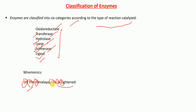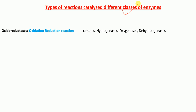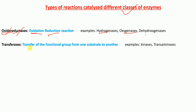Now let's talk about the reactions catalyzed by each class. Oxidoreductases catalyze oxidation and reduction reactions. Examples include hydrogenases, oxygenases, and dehydrogenases.